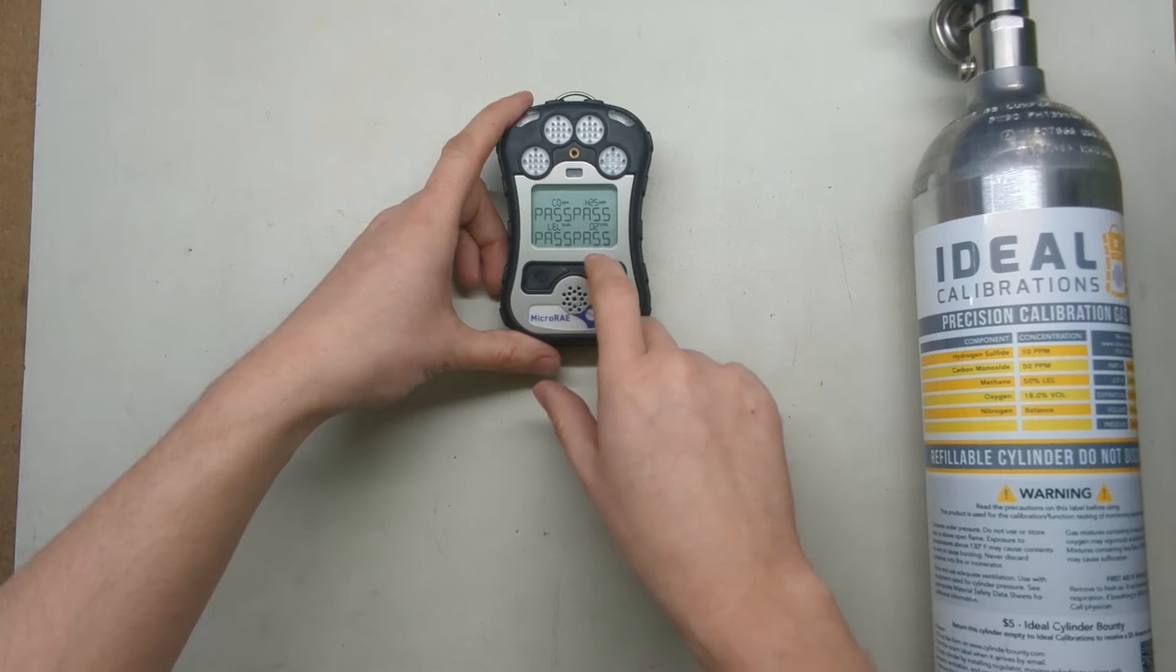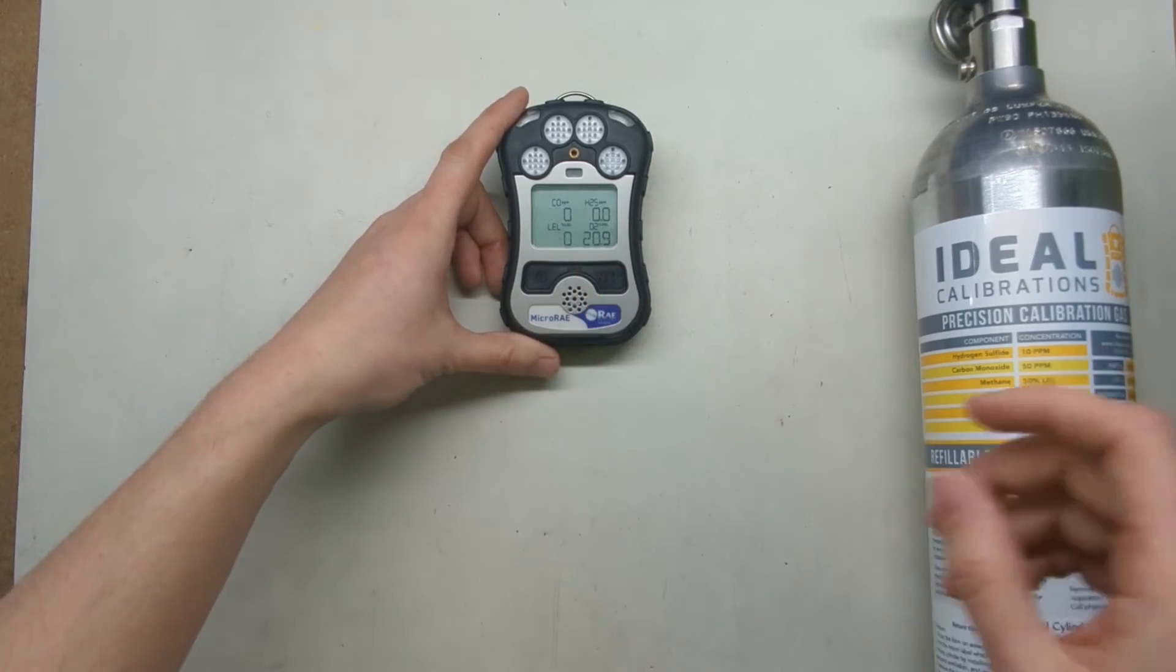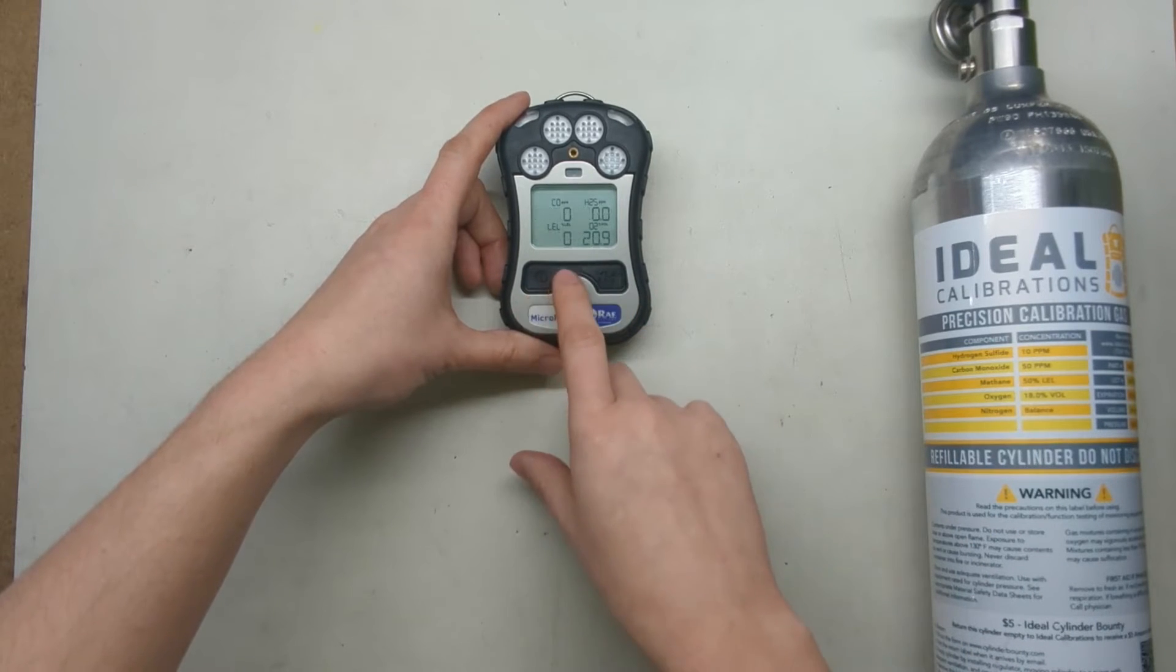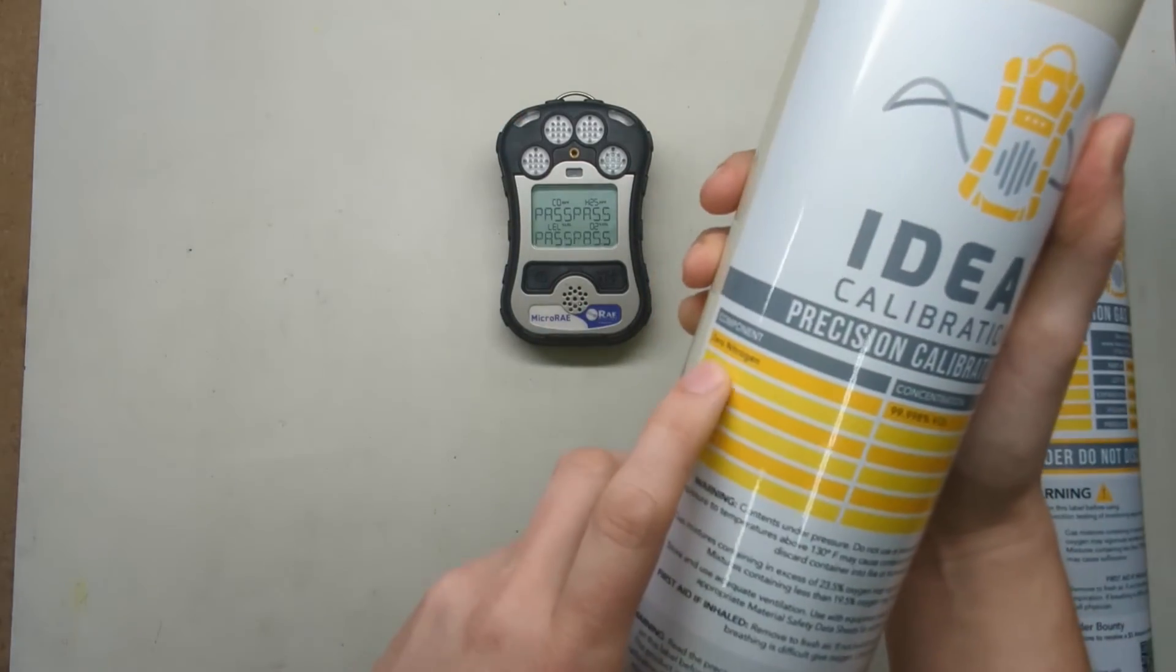Sometimes if the oxygen sensor is reading strange after a new installation, you might need to do another calibration with nitrogen. You can do that by going into the menu and going to single zero and choosing O2. To do that, you need a cylinder of pure nitrogen.